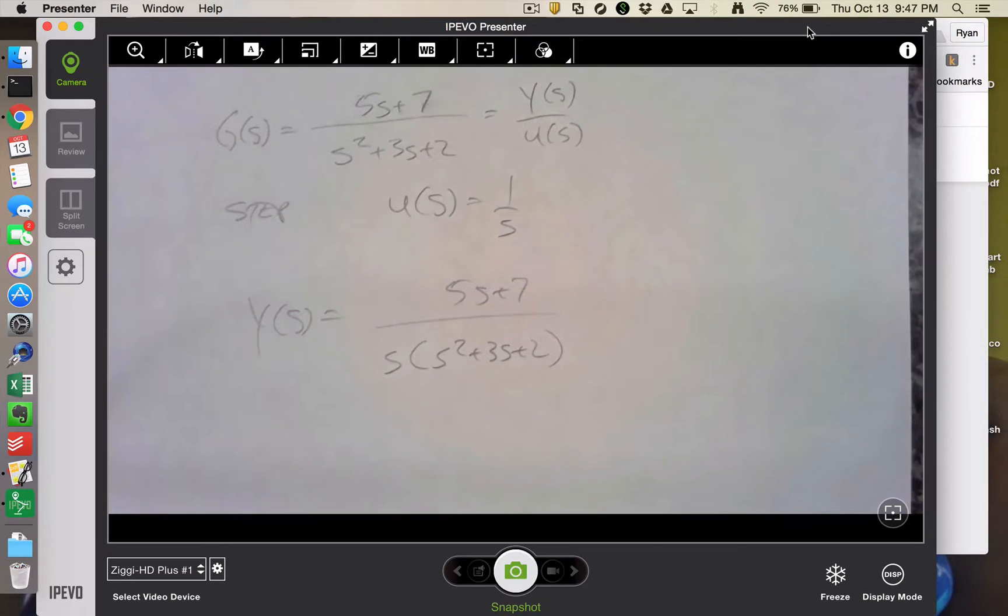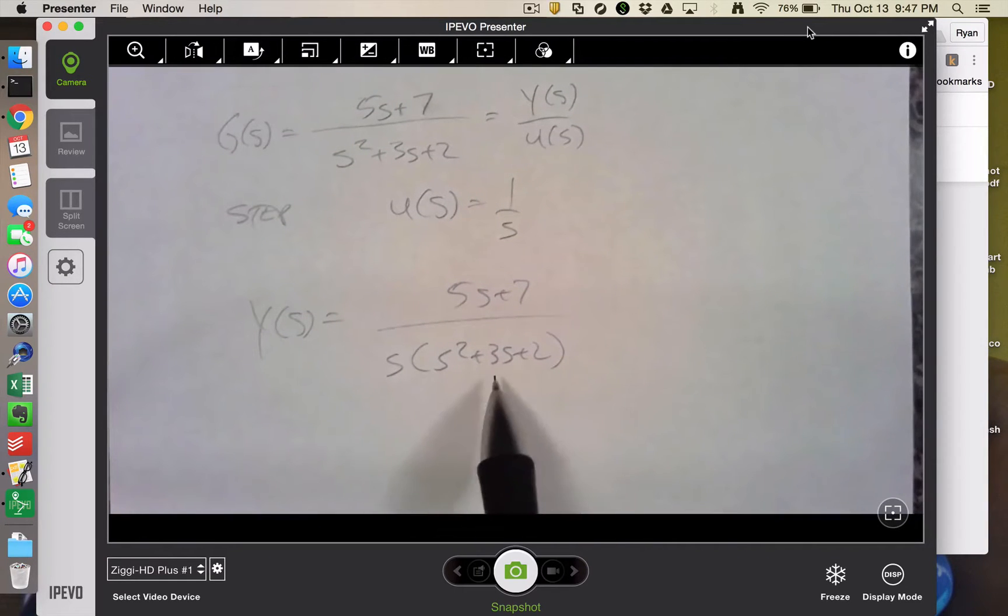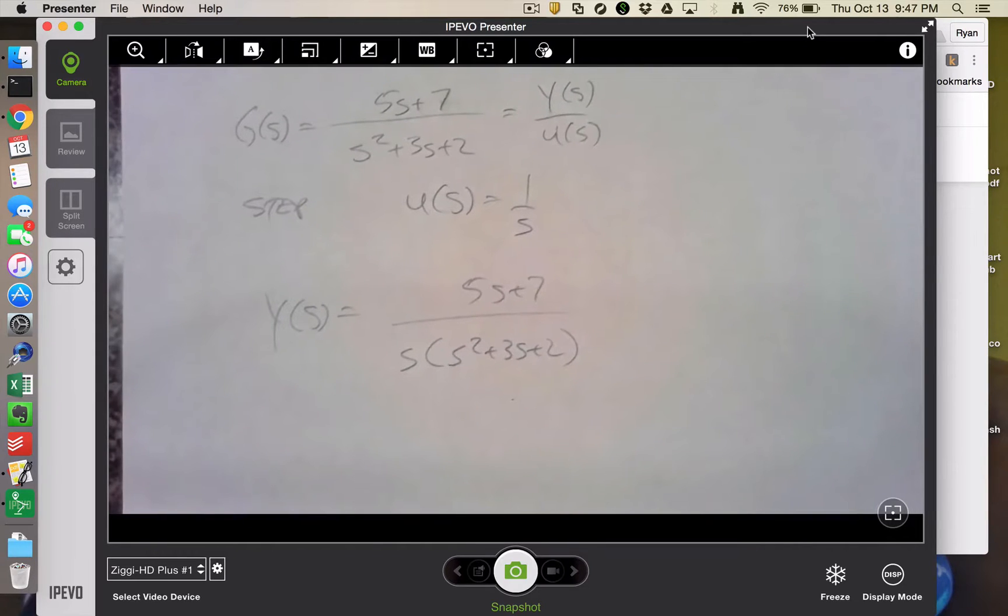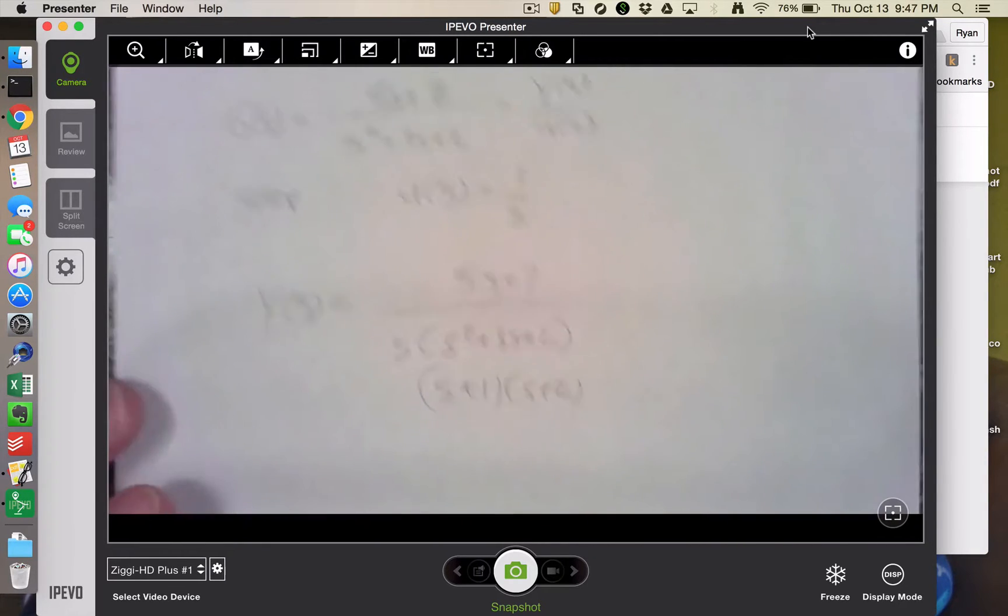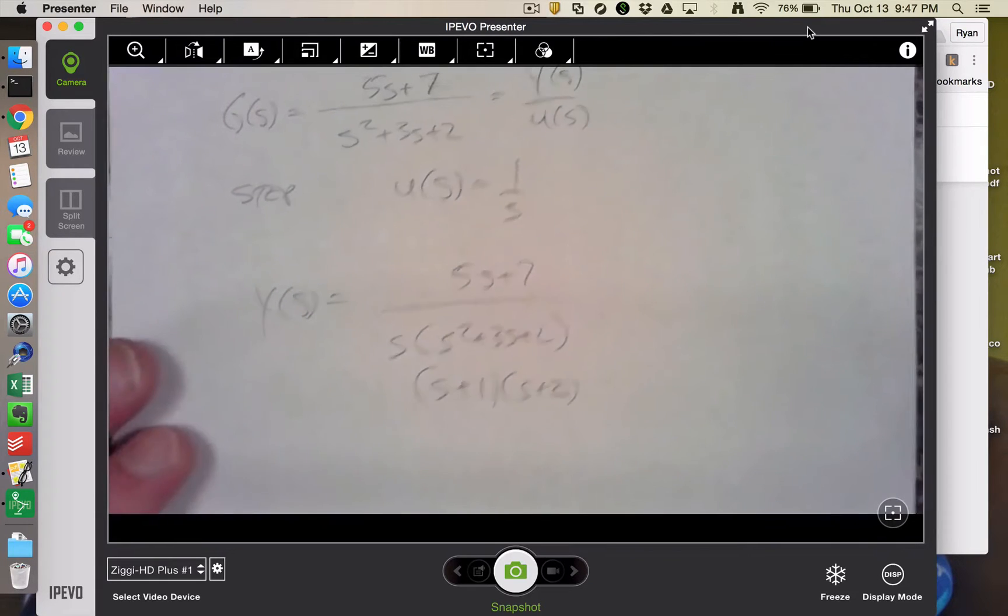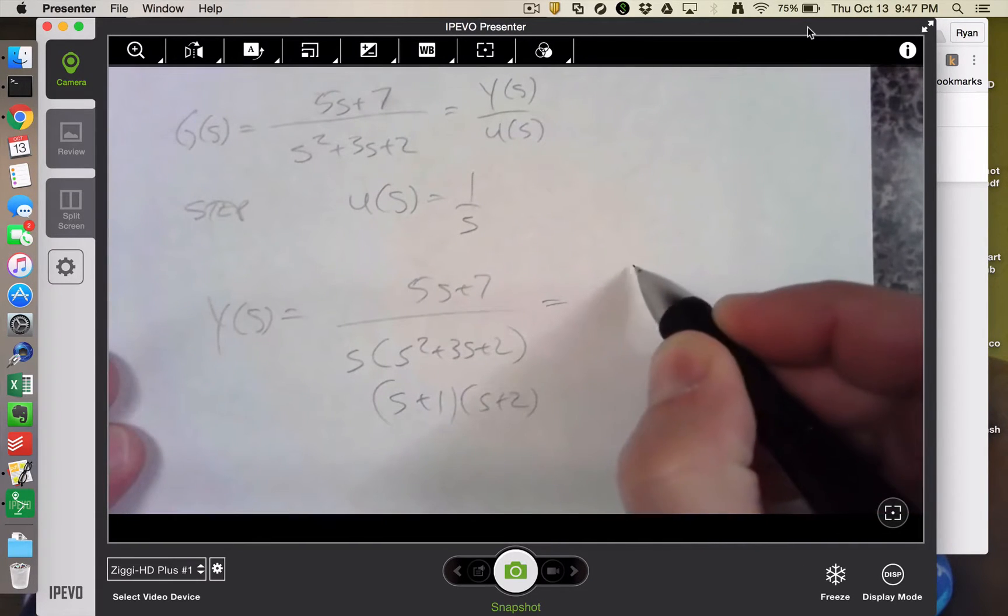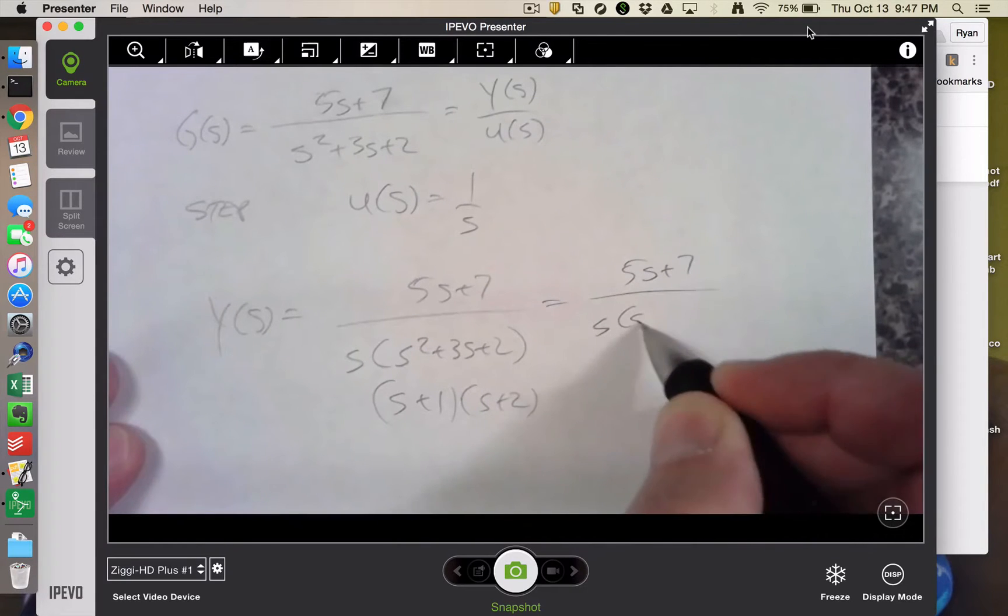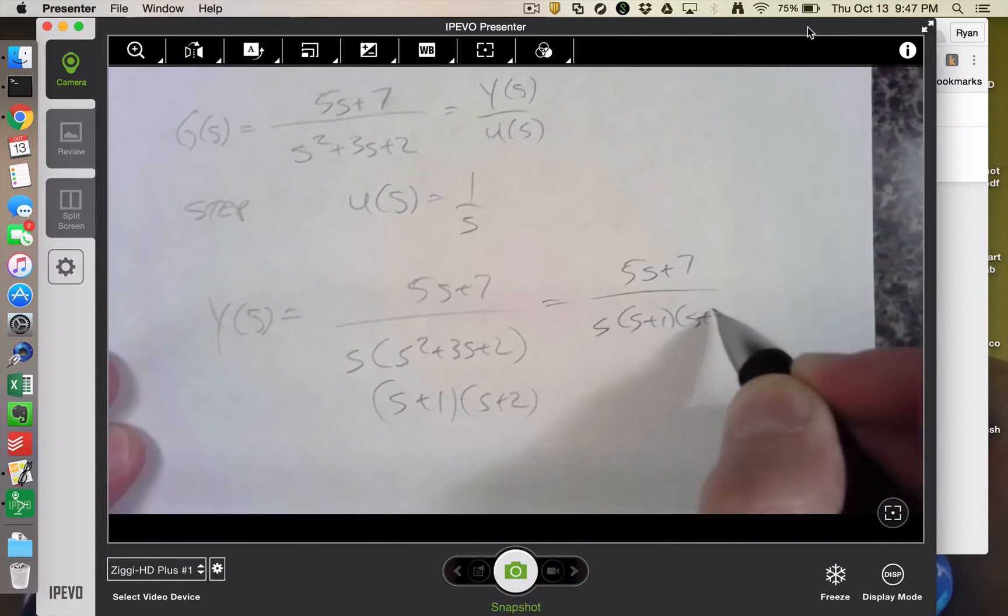I need to do a partial fraction expansion. The question is, what are the roots of this thing? And a core question is always to ask, is it underdamped or overdamped or what? And it turns out that that can be factored into s plus 1 times s plus 2. You should be able to quickly verify that. So I'm going to write this as 5s plus 7 over s times s plus 1 times s plus 2. So relatively straightforward.